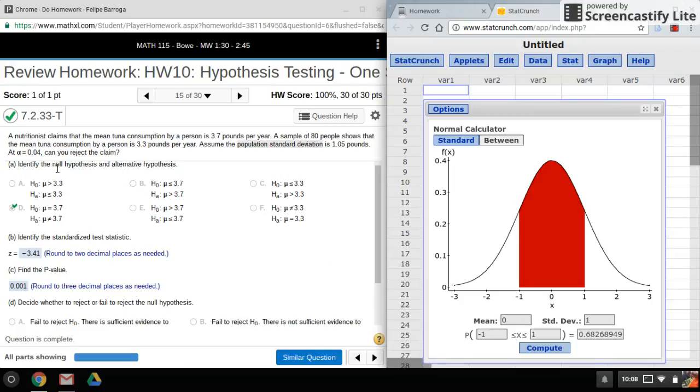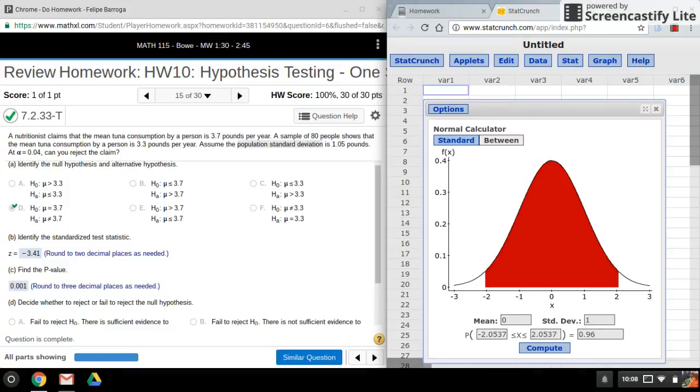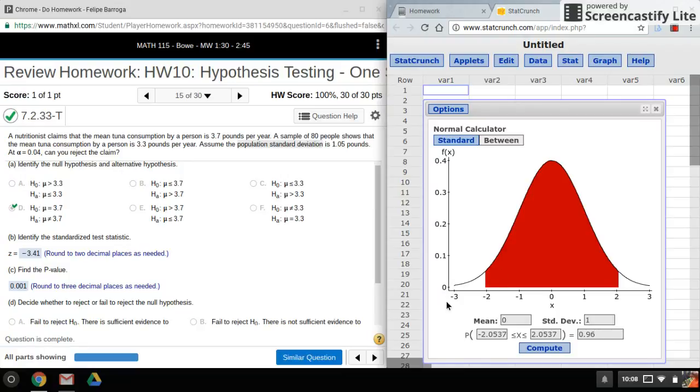Okay, then I'll click on Compute and these are my two critical values. So again, the rejection regions are always in the tails. So for a two-tailed test, that's what we'd have to do.